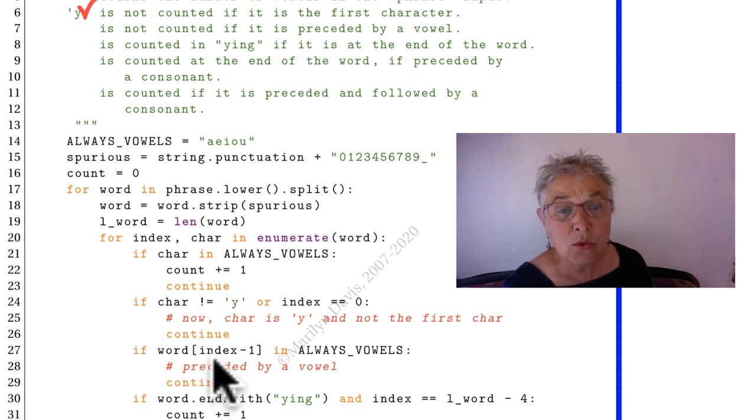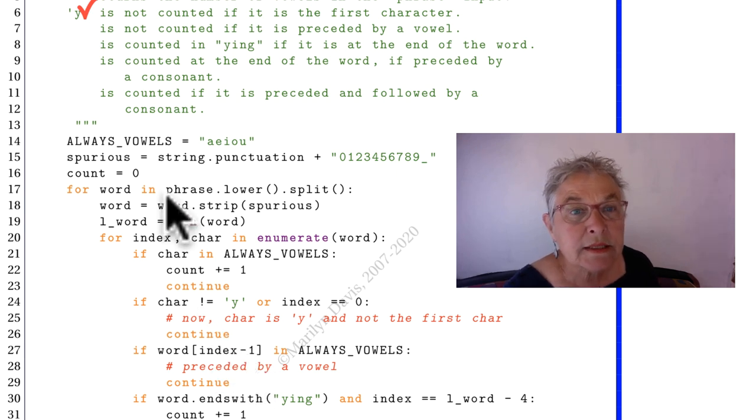Now we know that not only do we have a y, but we are not at the beginning of the word. So index minus one exists. And we see if it is preceded by a vowel, we don't count it. So if the character at index minus one is in always vowels, we don't count it. And we go and get the next character.